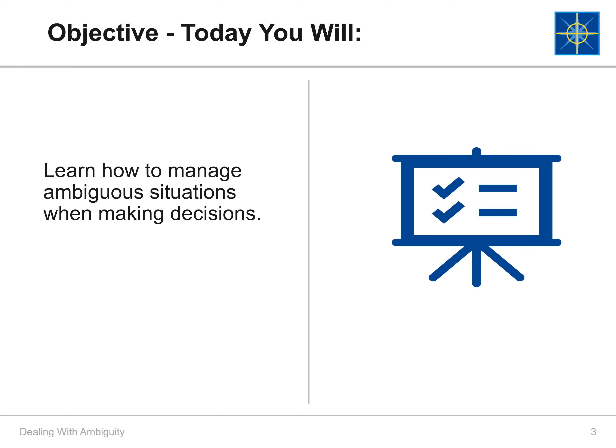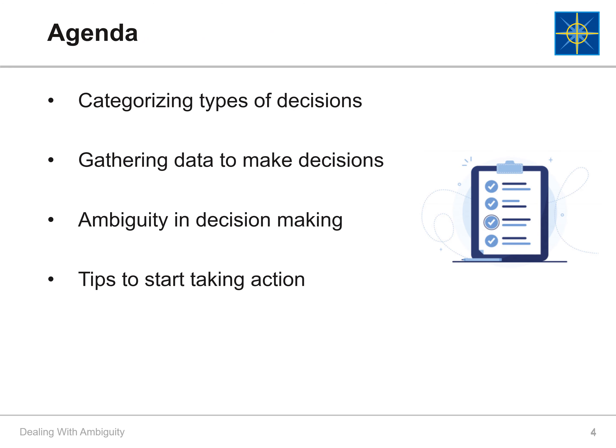Today you will learn how to manage ambiguous situations when making decisions. Here is a summary of our agenda. First, we'll categorize types of decisions and how to gather data to make decisions. Then, we'll factor ambiguity into decision-making and close with tips you can use right away.